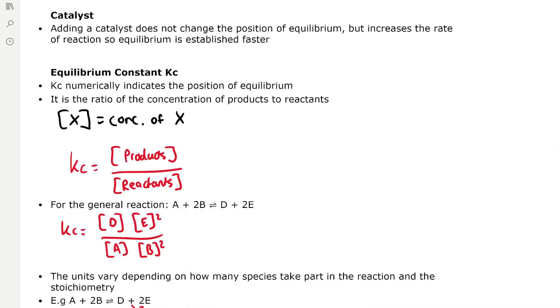Catalysts don't affect the position of equilibrium, but they increase the rate of reaction for both directions — both the forward and the reverse — meaning the equilibrium is established faster.